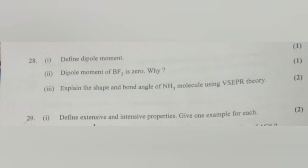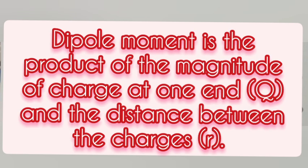Question 28.1: Define dipole moment. Answer: Dipole moment is the product of the magnitude of charge at one end and the distance between the charges.